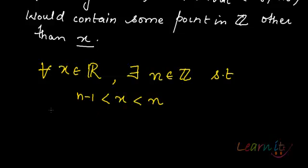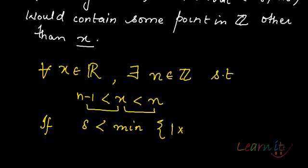Now, if I take my delta to be less than the minimum of the distances between x minus n plus 1 and x minus n,